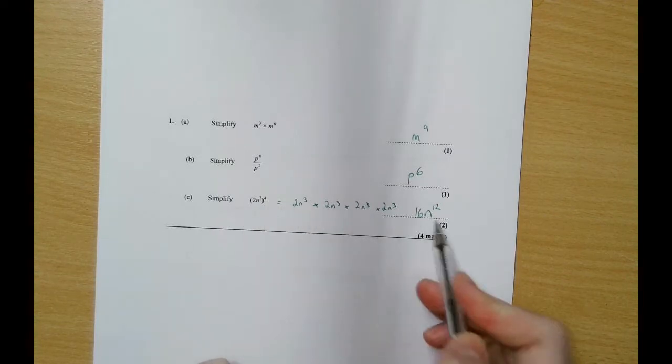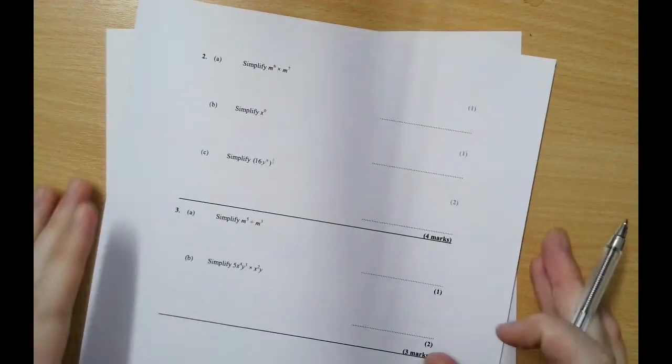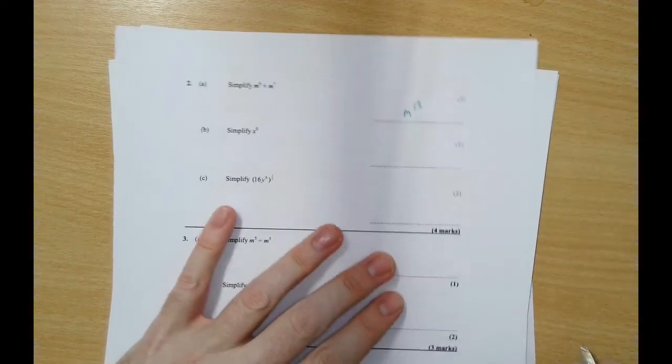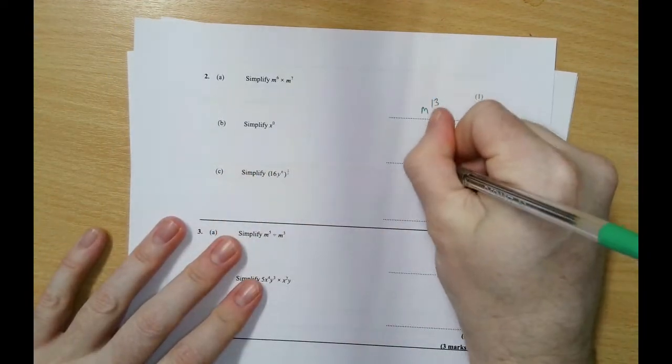Next question, simplify m to the power of 6 times m to the power of 7, that will be m to the power of 13. Rule for b, anything to the power of 0 is always 1.